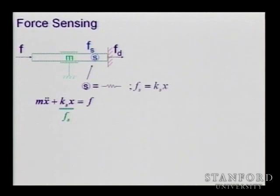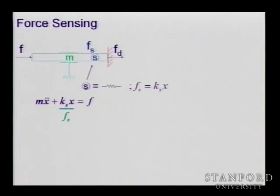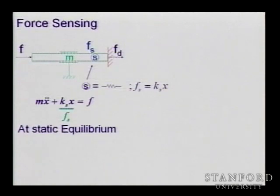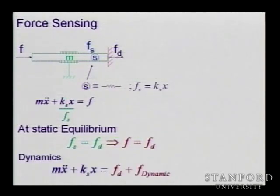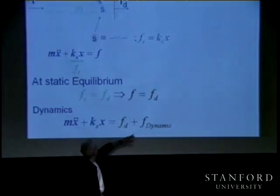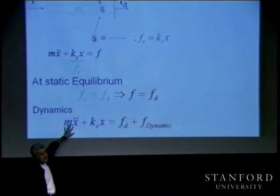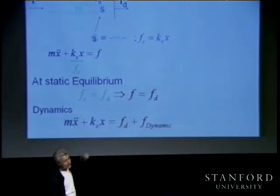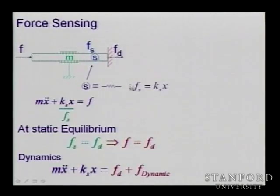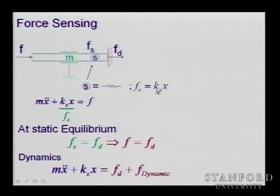If you have a sensor, it gives you the sensed force, which is the displacement of the sensor — a sensor is essentially a very stiff spring you are deforming, and the delta-X is very tiny. With the sensor information, you can achieve F equal to F-desired by selecting a controller that feeds forward the desired force and handles the error through feedback. This allows you to control the mass in terms of forces.